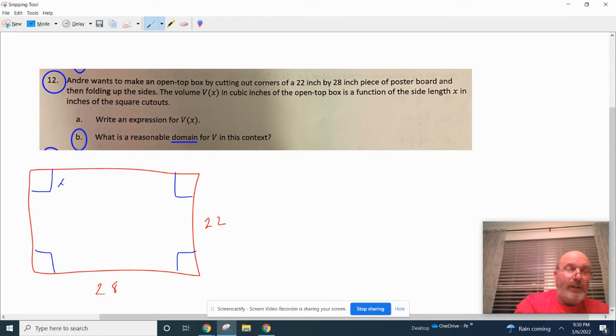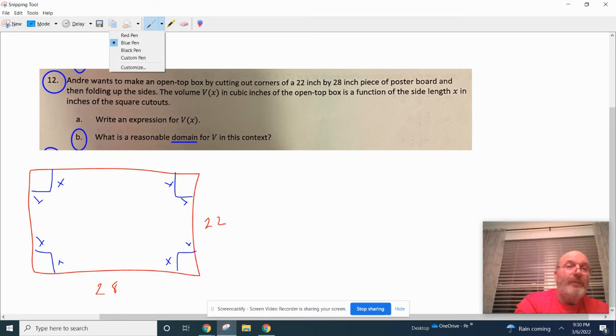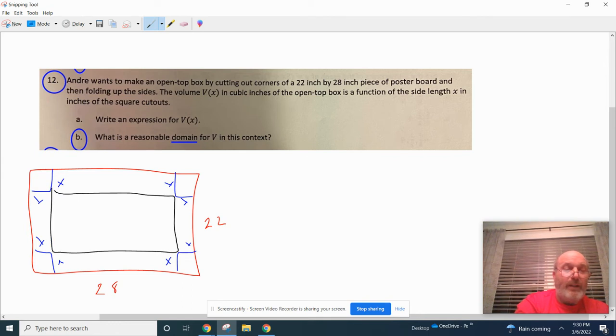You take out X, you take out X, you take out X square corners here and that means that you end up with a box. This edge is going to form the bottom of the box right here. When you take out these square corners, you take out this yellow shaded part and you make this box.